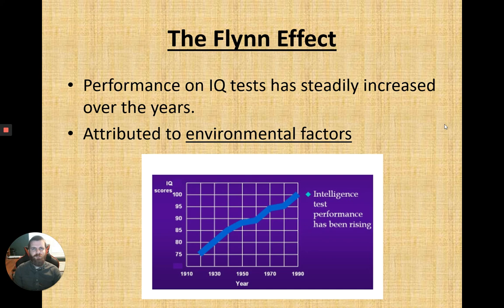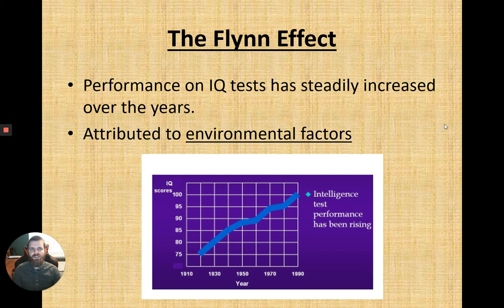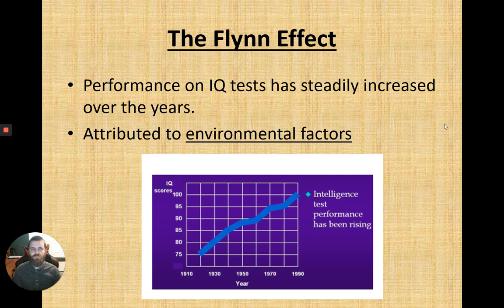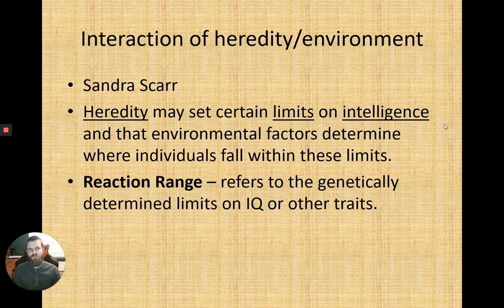One of the final environmental points is the Flynn effect — the explanation for why IQ scores have steadily risen over the years. Genetically we're not very different from people in 1910 or 1920, so the increase is attributed purely to environment: technology access, study guides and prep materials for tests like the ACT and SAT, more exposure to academic content, and refined teaching strategies over the past hundred years.